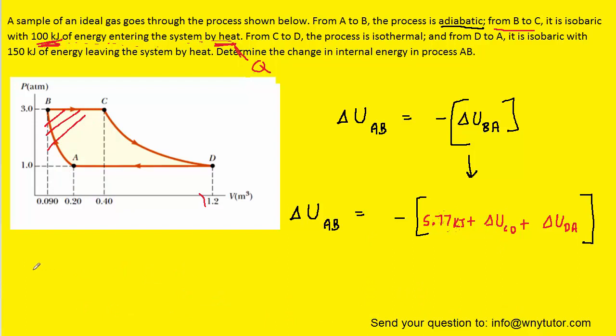We next want to tackle the change in internal energy when moving from C to D. Now, in the question, it notes that that process is isothermal. For an isothermal process, the change in internal energy is zero kilojoules. So that one's pretty easy. All we have to do is substitute zero in for the change in internal energy from C to D.